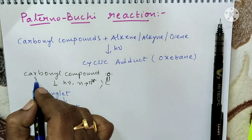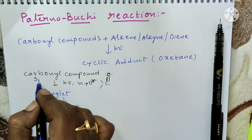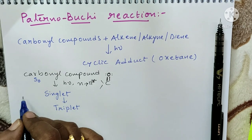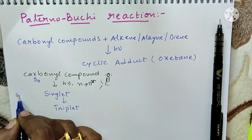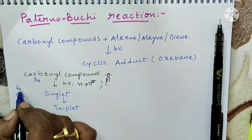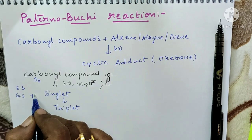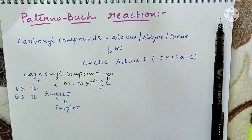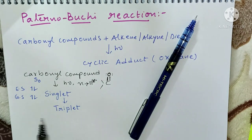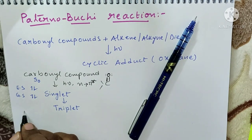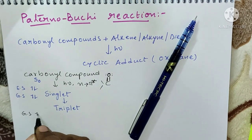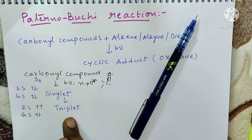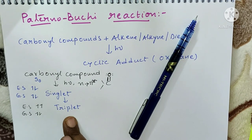By the absorption of light radiation, n→π* excitation takes place, and the carbonyl compound in the ground state is excited to the singlet state. In the ground state, the electrons are anti-parallel; in the excited singlet state, they are also anti-parallel. Whereas in the triplet condition, the ground state is anti-parallel but the excited state is parallel.